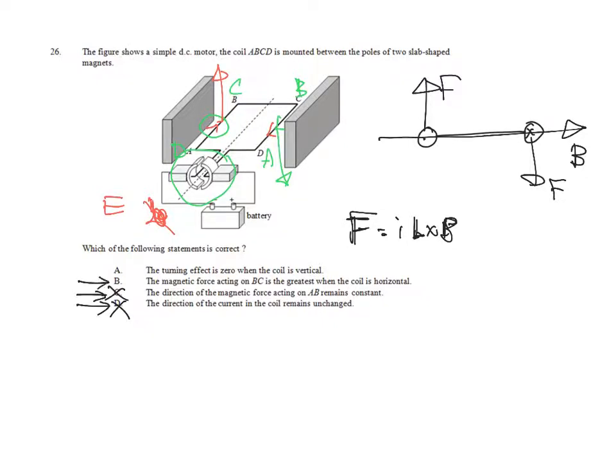Let's check option B. The magnetic force acting on BC is the greatest when the coil is horizontal. Please notice how to apply this equation. If we want to find out the magnitude of the force, we have to change it in this way, such that theta is the angle between the current element and the flux density at this moment. Do you find that BC is parallel to the magnetic flux density?